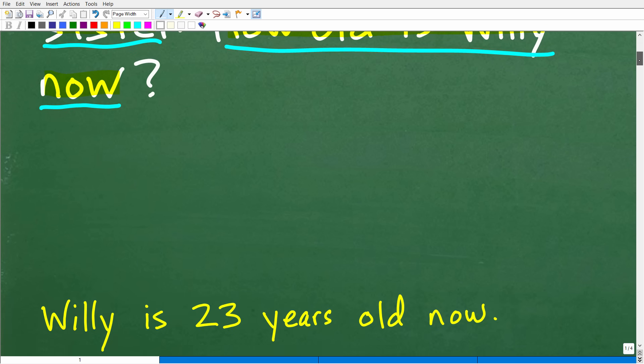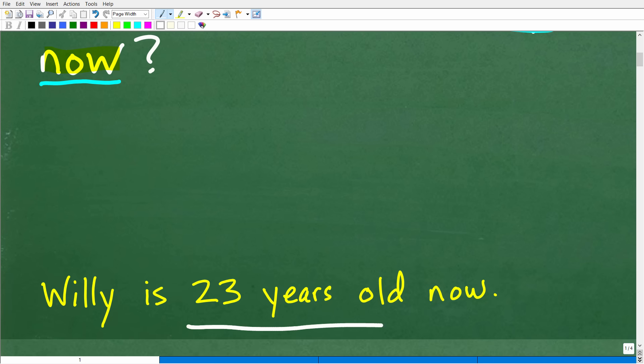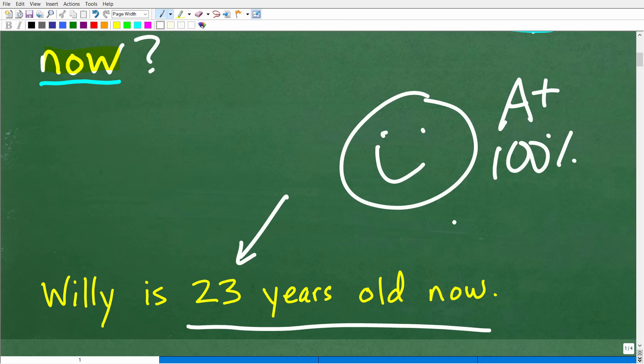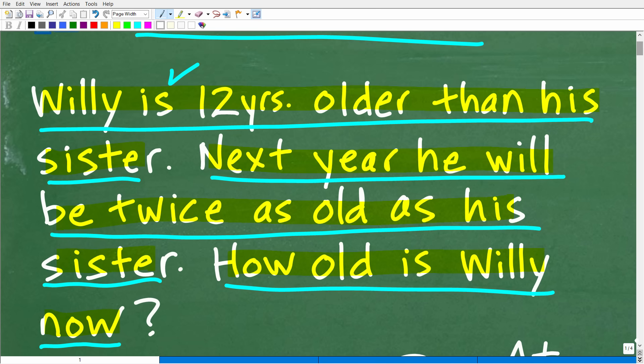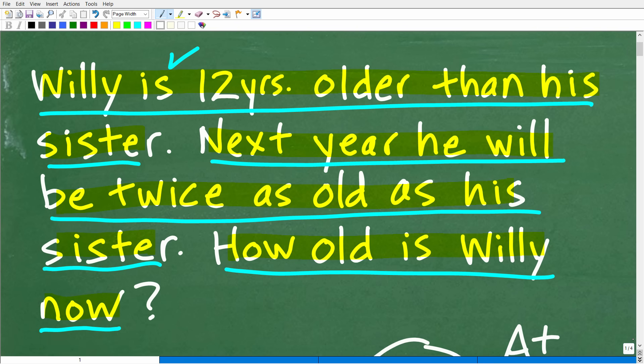Willie currently is 23 years old. All right, so how did you do? Well, if you got this right, we have to celebrate by giving you a nice little happy face and a plus 100% and multiple stars. So you can tell your friends and family that indeed you are a certified professional expert in the area of solving algebra age word problems. And that's what we have here.